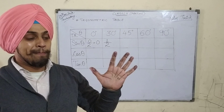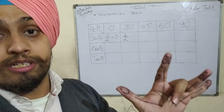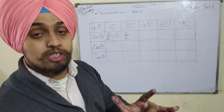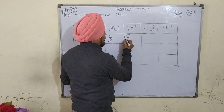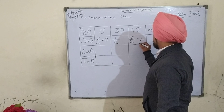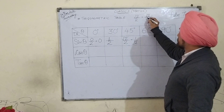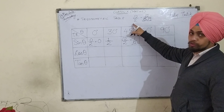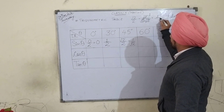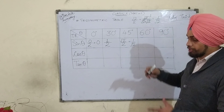Now let's see how we can recall the value of sin 45 degree. 45 is written on this finger, so I will bend this finger and see how many fingers are there to the left of it — 2 fingers. I will take the square root of 2, which is √2, and divide it by 2. Now √2 upon 2 is also equal to 1 by √2, because we can write the denominator 2 as √2 × √2, and those cancel to give 1 upon √2. So sin 45 degree equals √2 by 2, or equivalently 1 by √2.